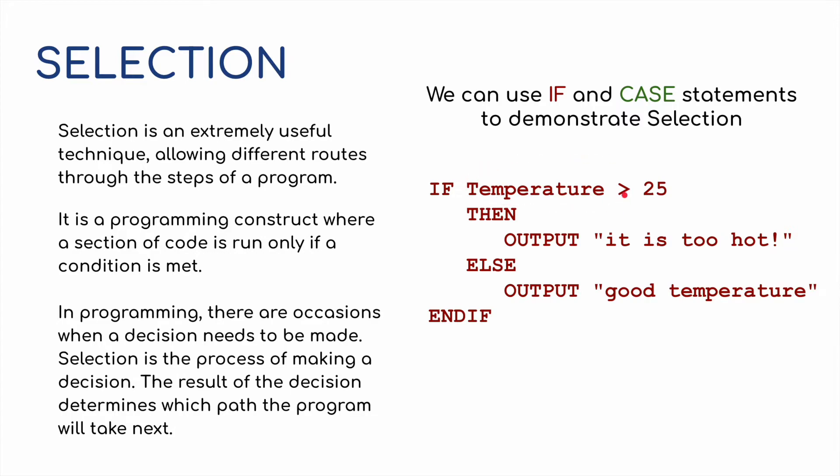For example, if the temperature is greater than 25, then output is too hot. Else, output good temperature. And if. So there we go, we've got two choices. If it's above 25, we do this. If it's 25 or less than 25, then we would output good temperature.